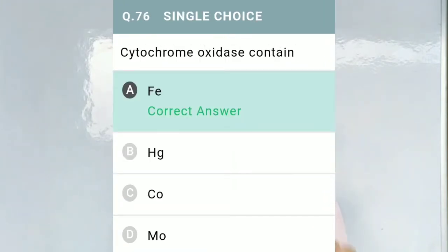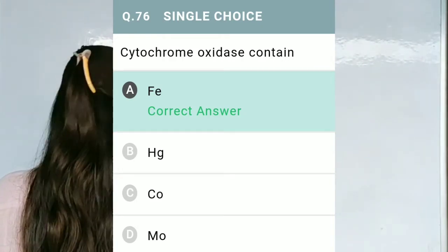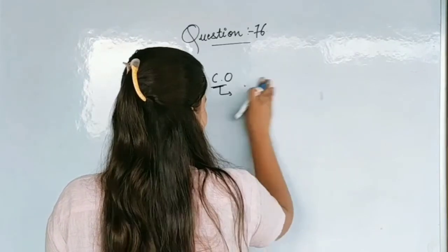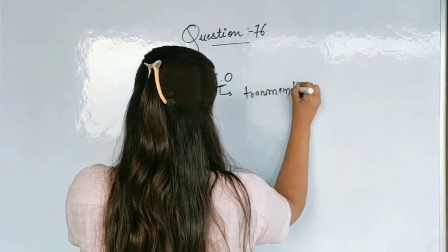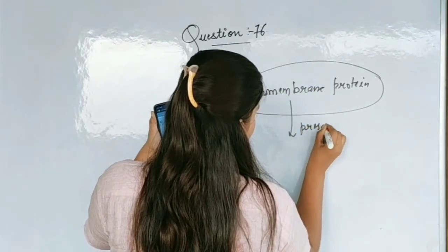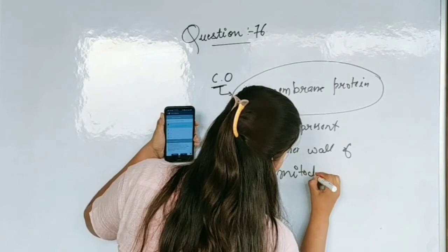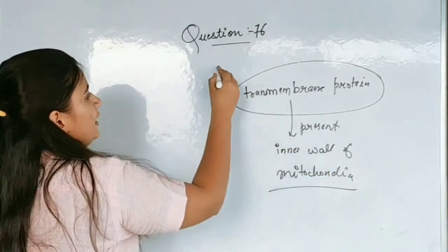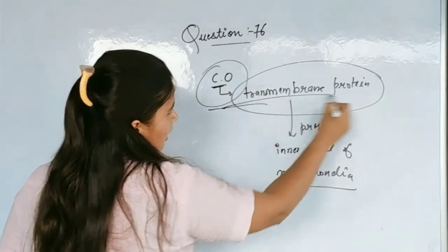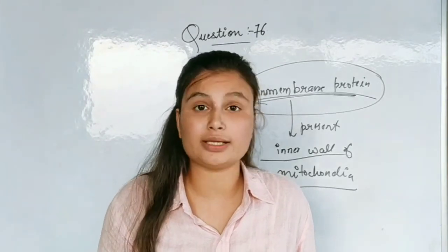Question No. 76: Cytochrome oxidase contains — Option A, Fe; Option B, Hg; Option C, Co; Option D, Mo. Cytochrome oxidase is a transmembrane protein present in the wall of the mitochondria. The correct option is A, Fe (iron).